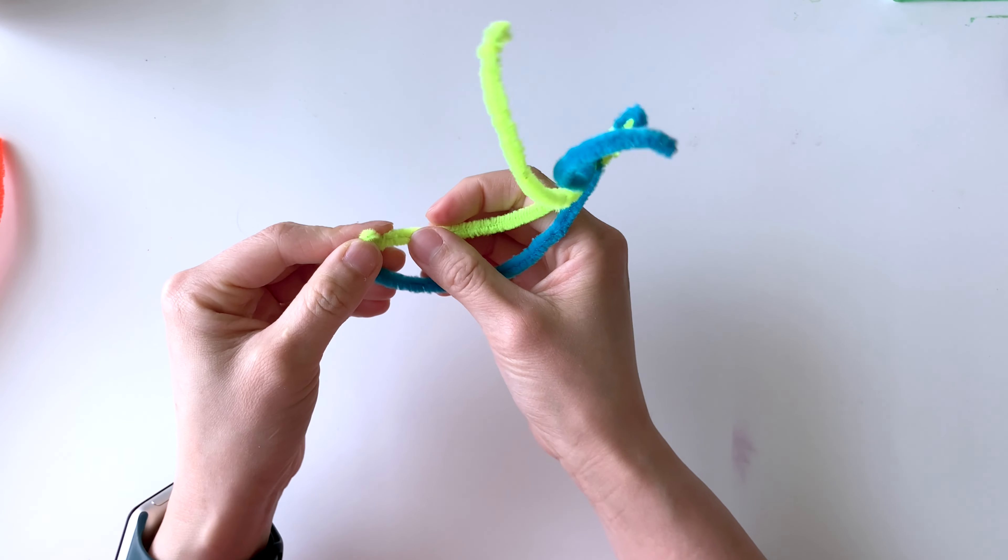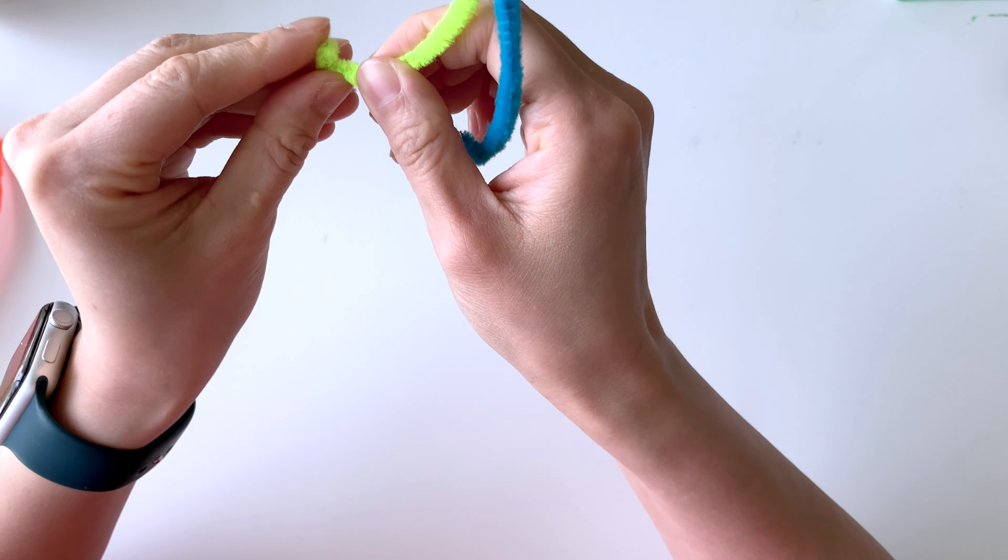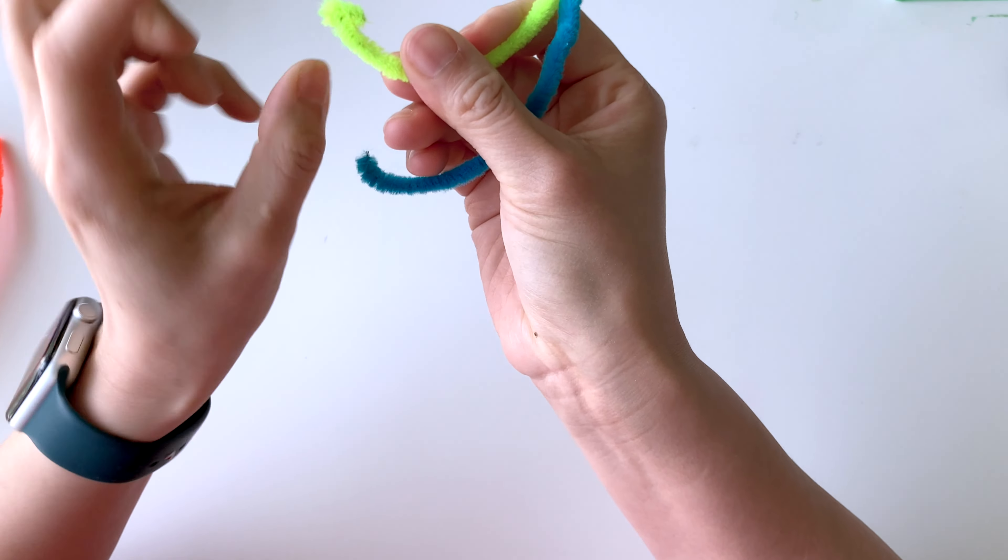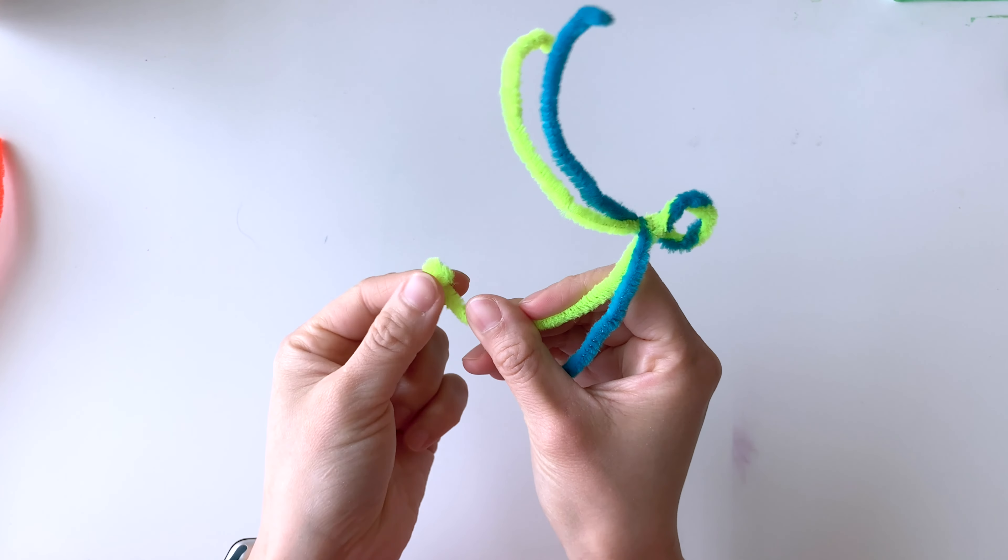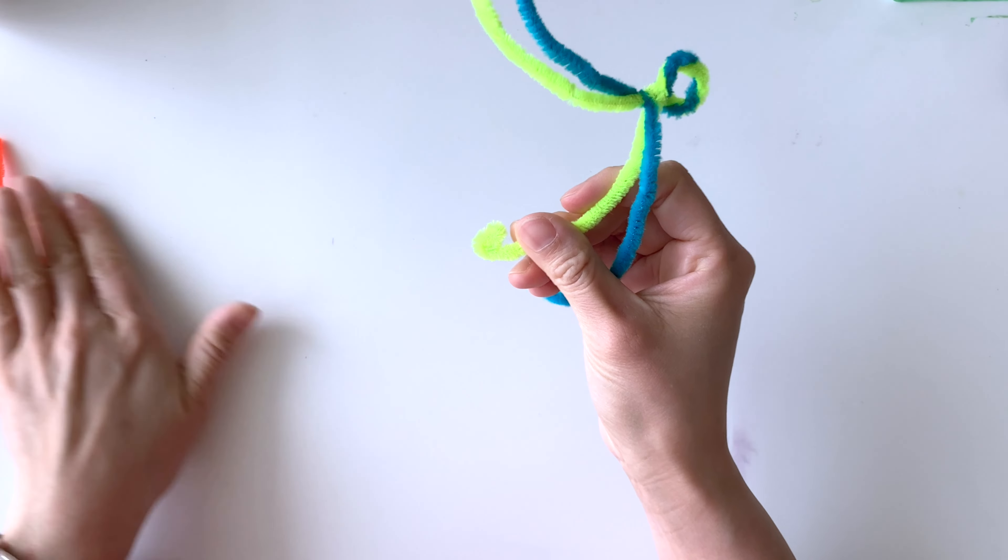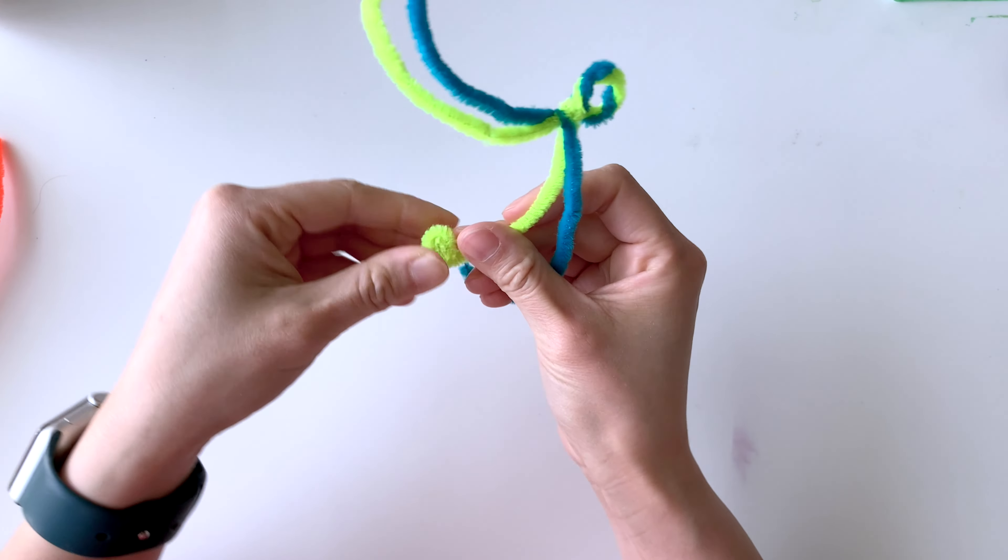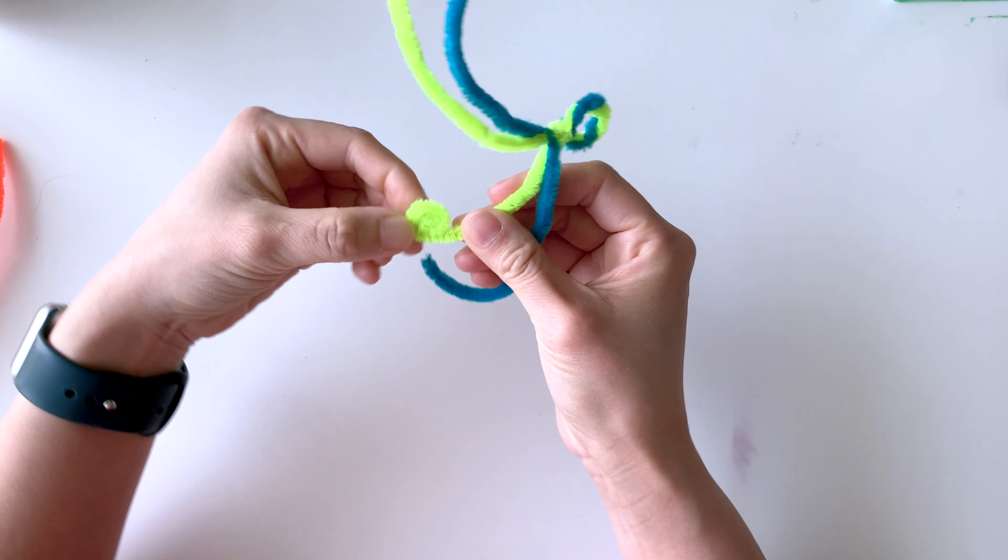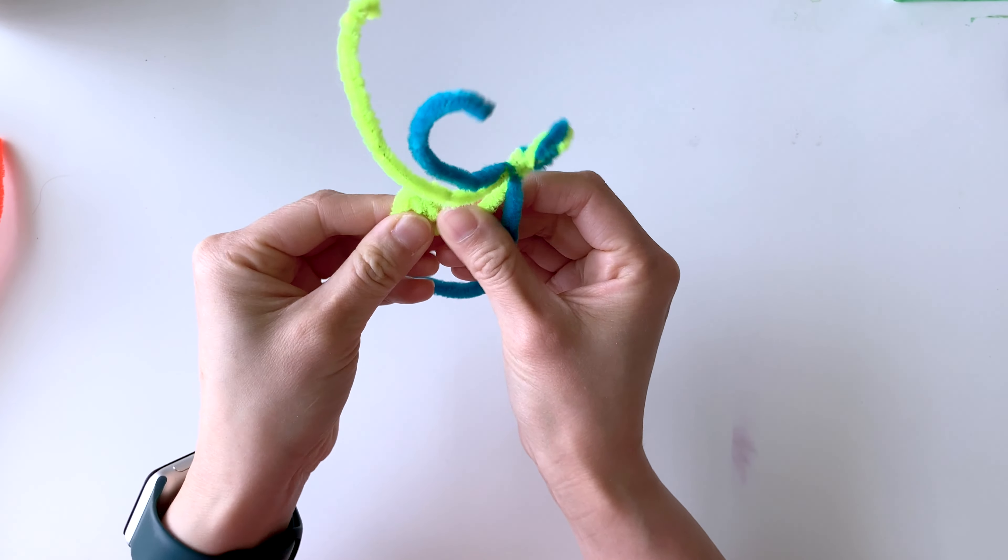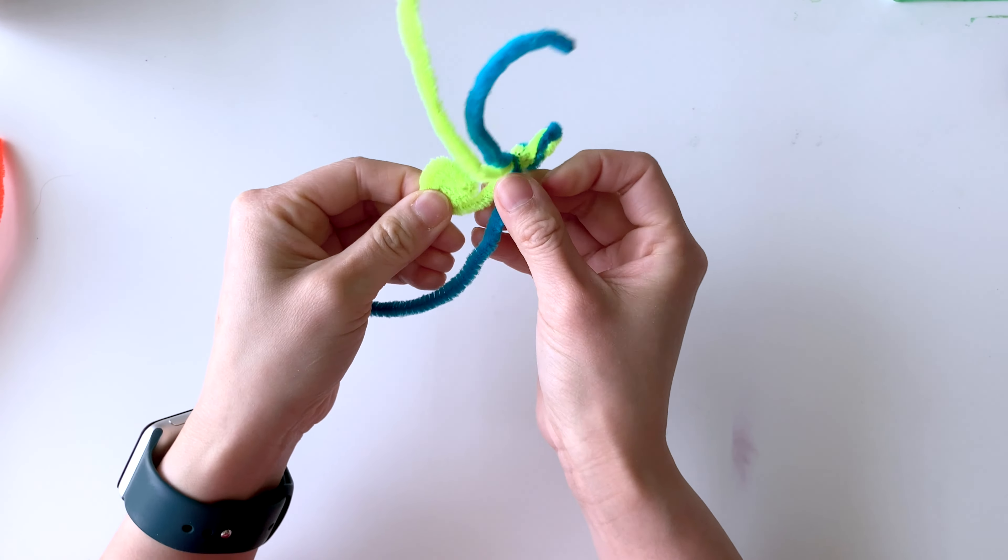But now I have four loose pieces that are going to be the wings of the butterfly. Now at the end of one of these pieces, I'm slowly going to coil them inwards and that will comprise one wing of the butterfly.